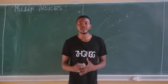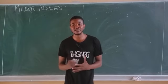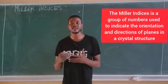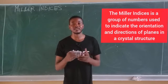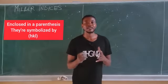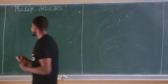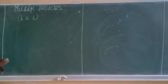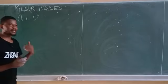Welcome to today's class. We're going to be talking about a concept in material science called the Miller indices. By definition, the Miller indices is a group of numbers used to indicate the orientation of planes and directions in a crystal structure. They are usually symbolized by hkl and enclosed in parentheses without commas — something like (hkl).